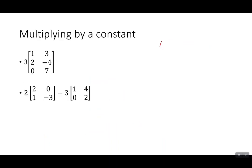All right. And then if you want to multiply a constant, if I have a matrix and I want to multiply it by a constant, if I want to do 3 times the matrix 1, 3, 2, -4, 0, 7, it's a 3 by 2 matrix.